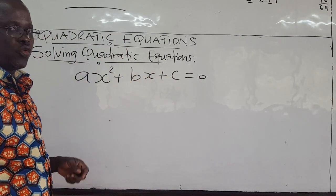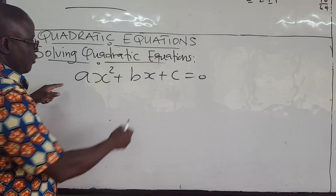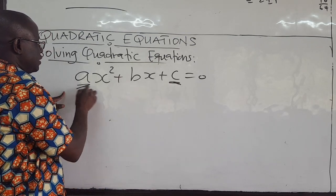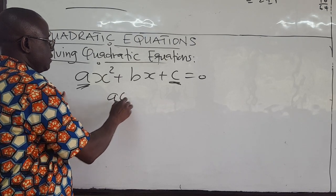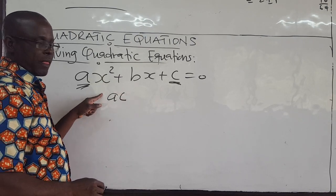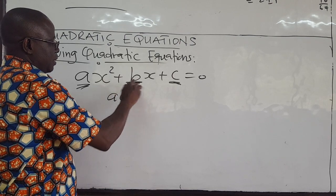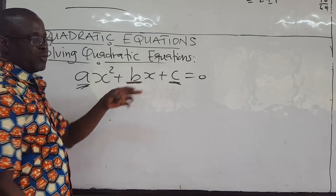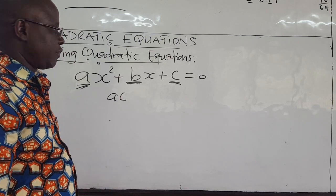Now there are two ways of doing this. If you multiply c by the coefficient of x², you have ac. If you can find factors of this that will add up to give you b, then the quadratic equation is factorizable, and then it's easier to solve.